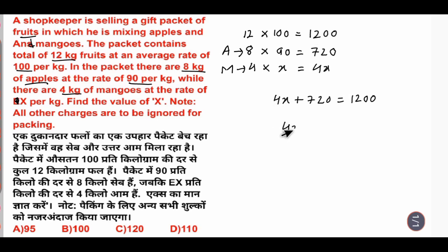Toh yahan se seedha karenge 4X equals to, ye udhar jayega toh minus. Toh minus karenge toh kitna aajayega? 1200 minus 720 kitna aajayega? 480 aajayega.